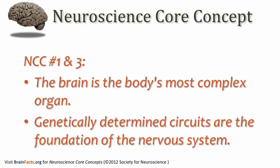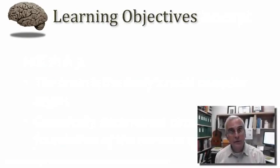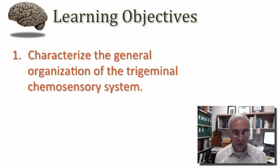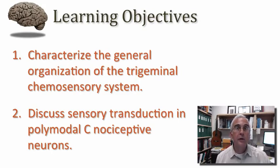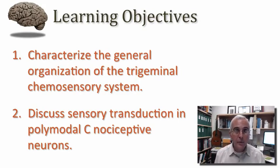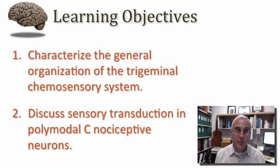What we come to in this part is a consideration of those chemical sensations around the region of the head, and inside the head as well, that can give rise to some kind of protective or avoidance response. My learning objectives for this session are: first, to be able to characterize the general organization of the trigeminal chemosensory system; and second, to discuss the sensory transduction mechanisms associated with polymodal C nociceptive fibers. In this segment, I want to focus on those polymodal C fibers associated with the trigeminal nerve that innervate sensitive tissues in the head, allowing us to respond to irritating chemical substances in the environment or ones that we ingest.